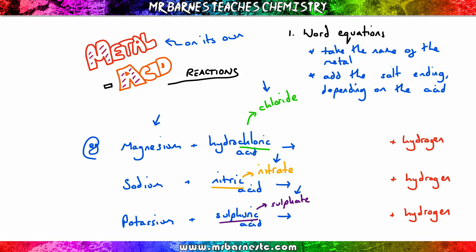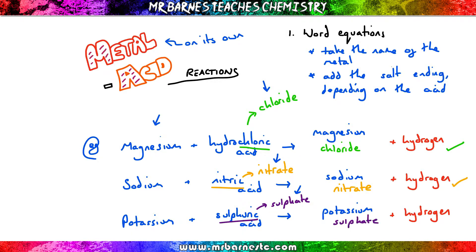So we've got magnesium reacting with hydrochloric acid — hydrochloric acid makes a chloride, so we put magnesium chloride. Sodium is reacting with nitric acid — nitric acid makes a nitrate, so we get sodium nitrate. And finally, potassium is reacting with sulfuric acid, so it makes potassium sulfate. And it really is that straightforward.